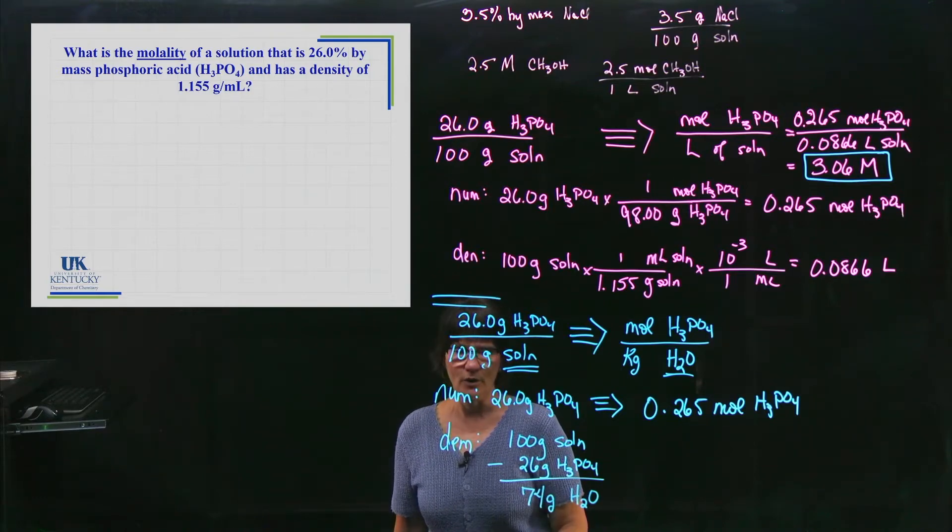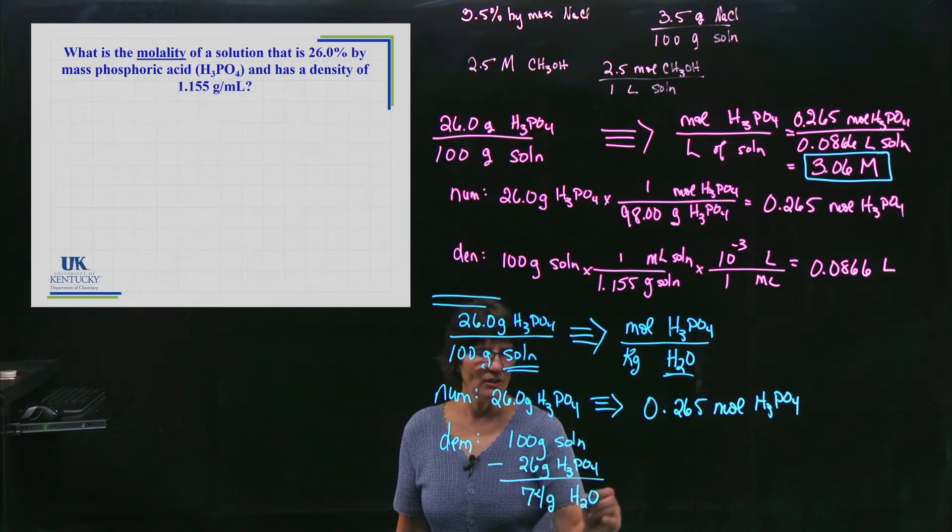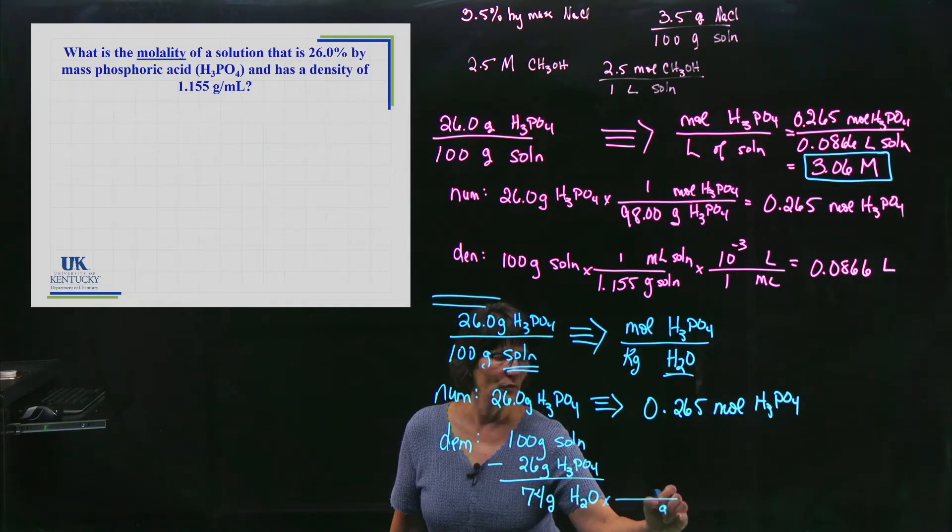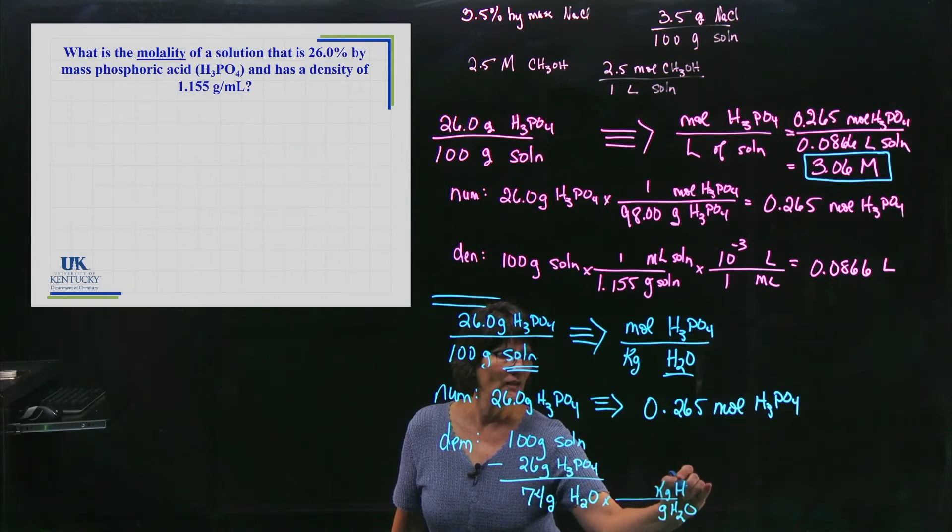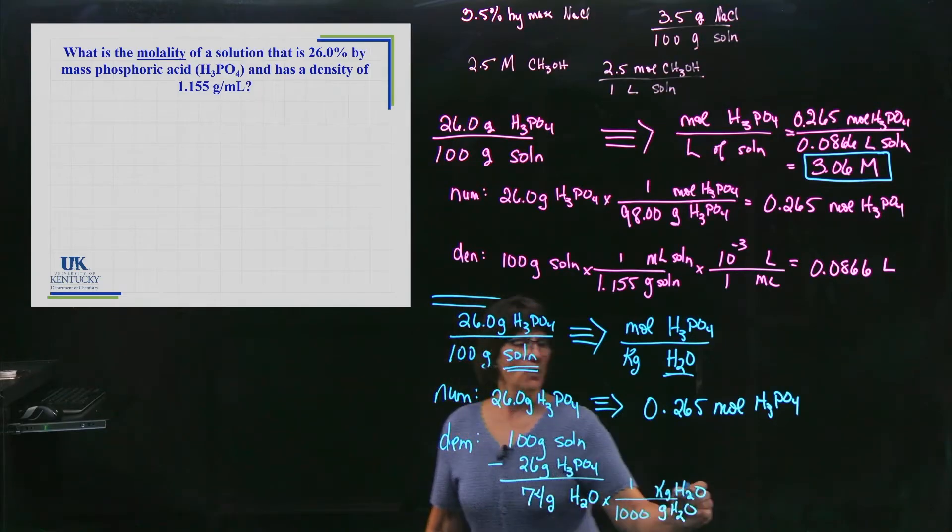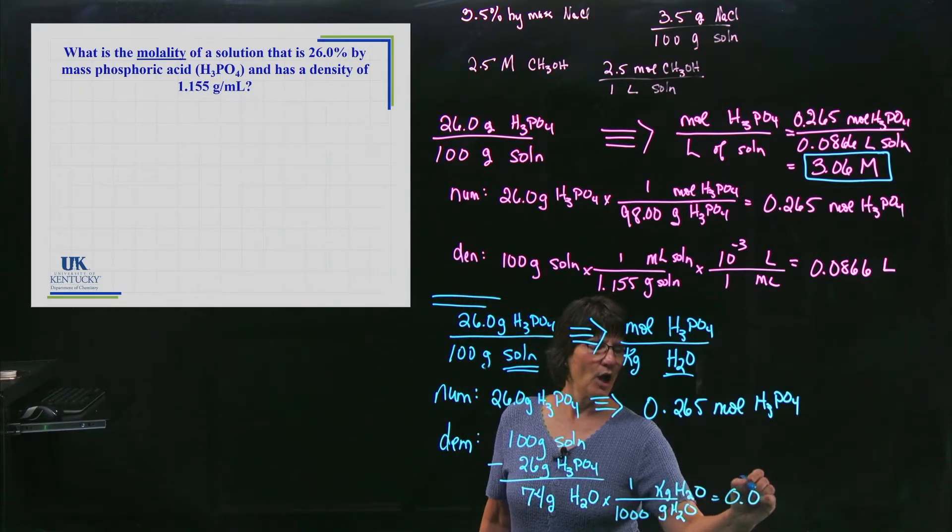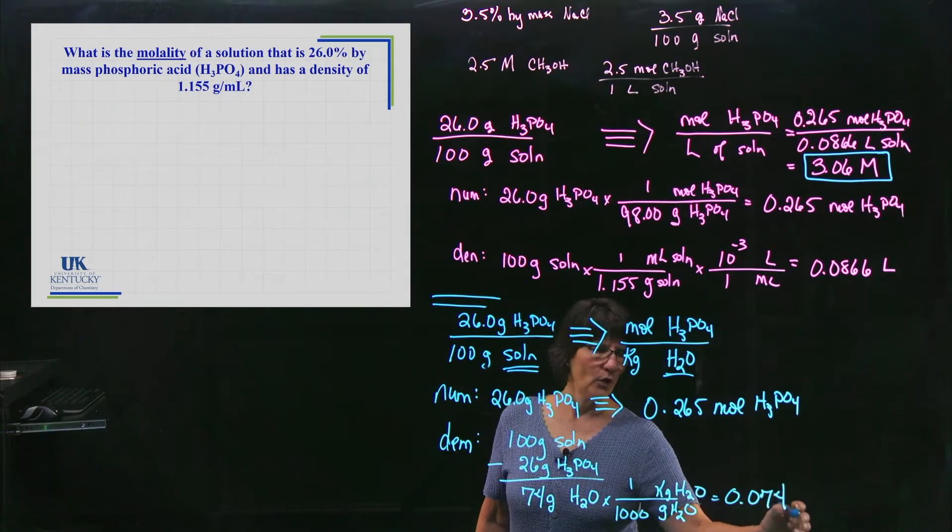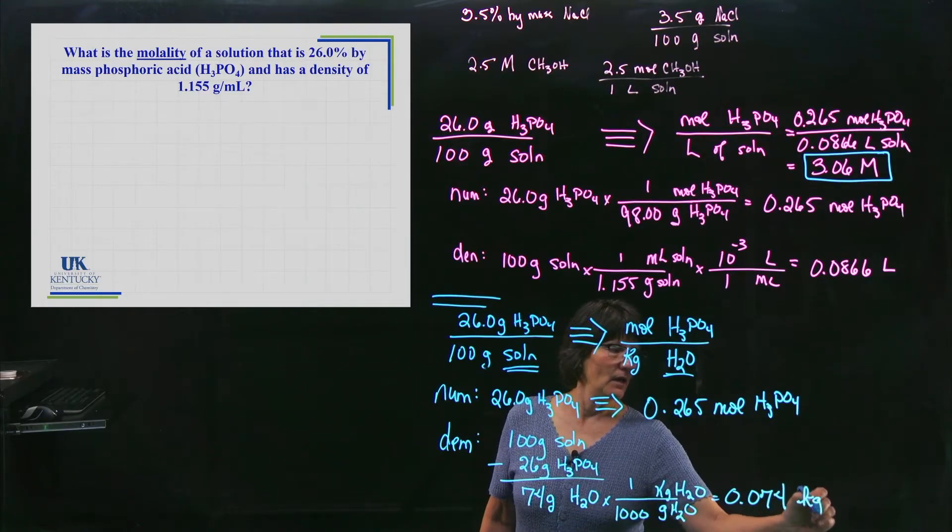So this isn't dimensional analysis, is it? This is subtraction. But I will go ahead and go from grams of water to kilograms of water because the denominator has to be in kilograms. And kilo means 1,000. So I have 0.074 kilograms of water.